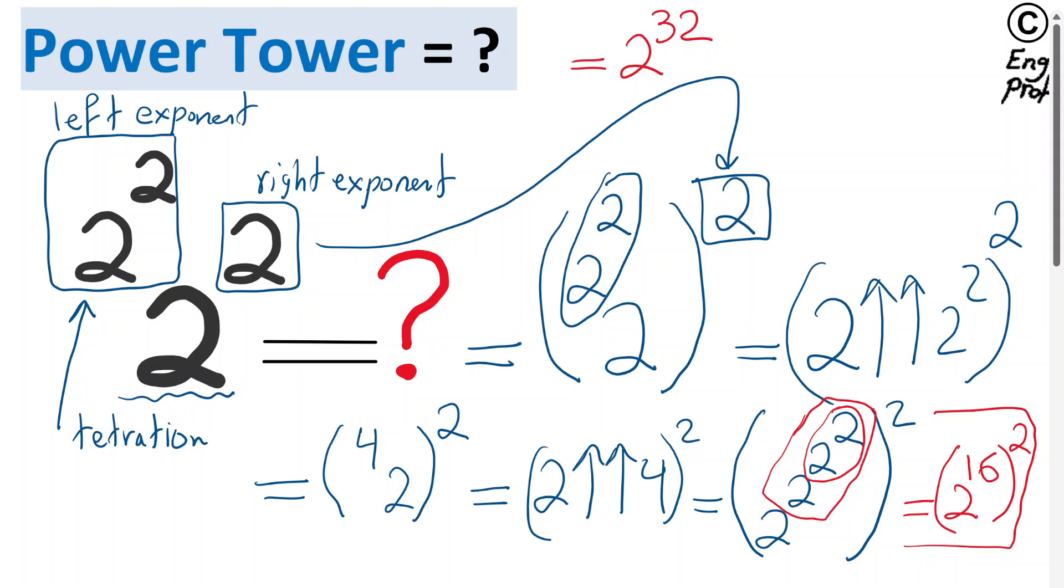I hope that this example is helpful in terms of illustrating both tetration, raising or tetrated to a power, which is left exponent, and then the right versus right exponent, and also the precedence of tetration versus the right exponentiation. I hope this is helpful. Thank you.